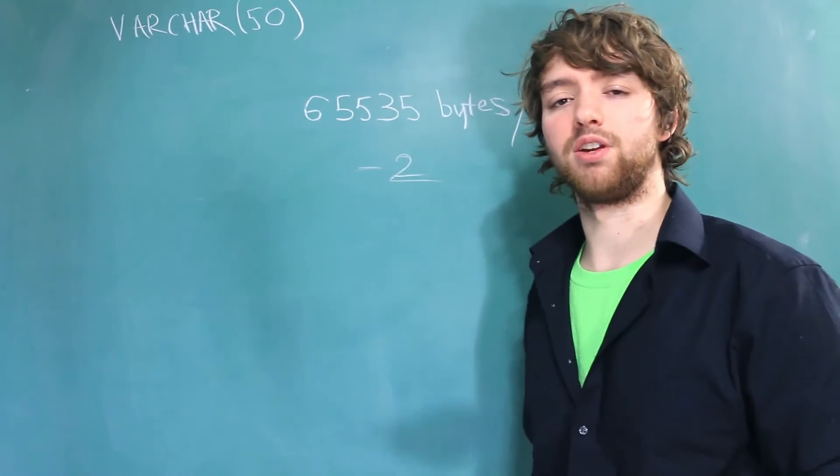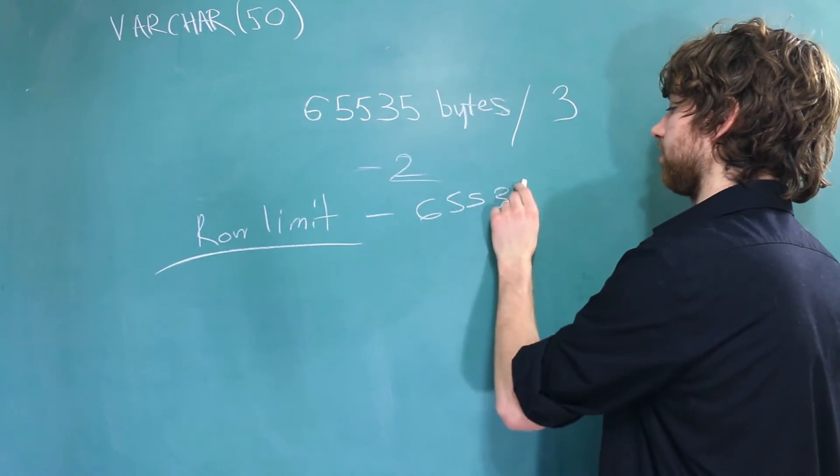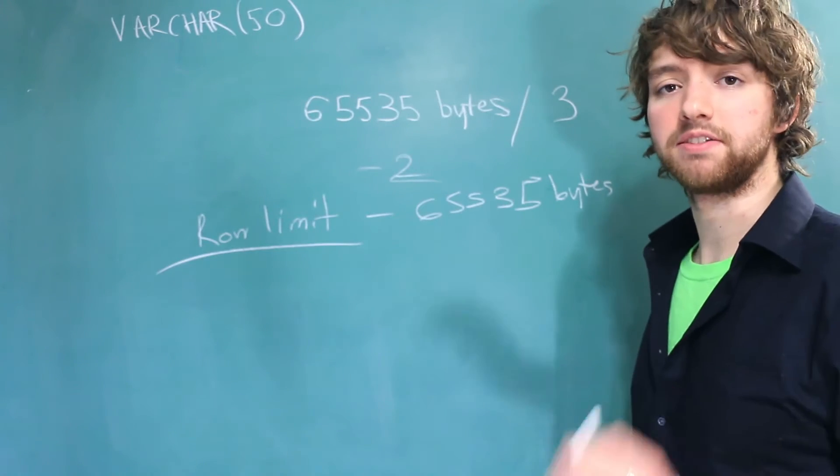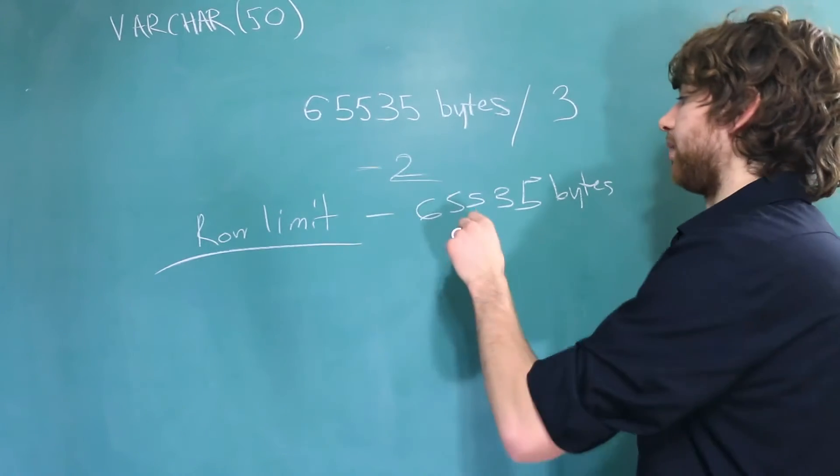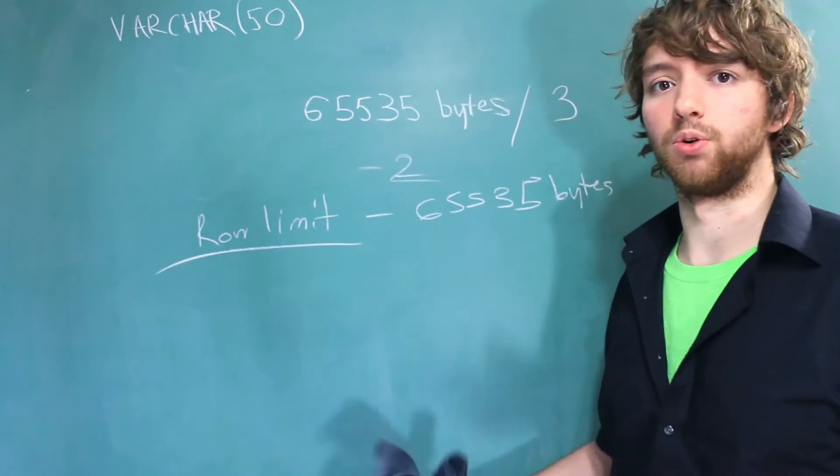Additionally, MySQL has what's known as a row limit. The row limit is also 65,535 bytes. That means if we try to make the max VARCHAR, the row limit is going to be hit, and we're not going to be able to create any other columns that store any data.